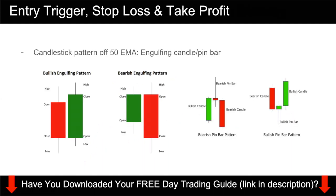Before I go into the actual examples, I want to talk about the entry trigger, stop loss, and how do you take profit. Your entry trigger is very simple — you want to look for a reaction at the 50-period exponential moving average. I want you to look for a candlestick pattern. There is the engulfing pattern and the pin bar pattern — you can just use these two. This is the bullish engulfing pattern: this candle engulfs the previous candle, meaning the close of this candle is higher than the open of the previous candle. For bearish engulfing pattern, the close of this candle is lower than the open of the previous candle.